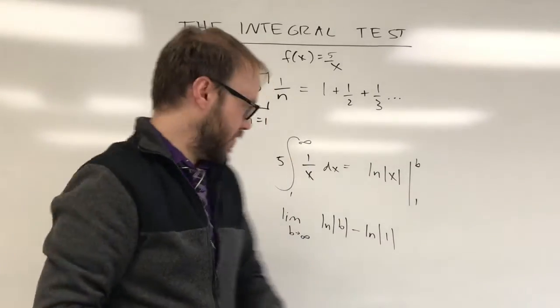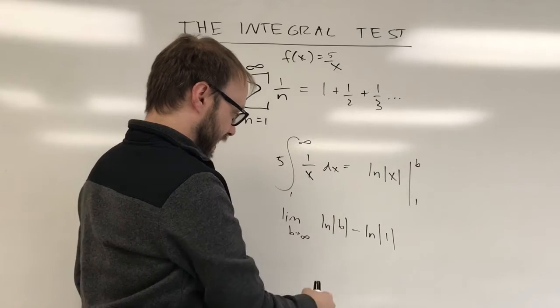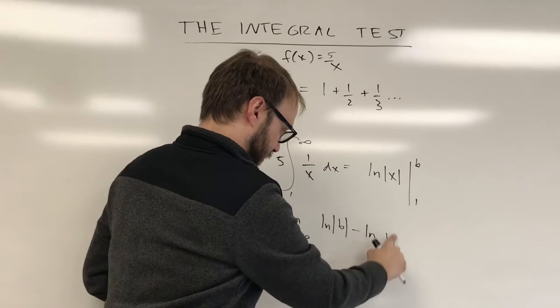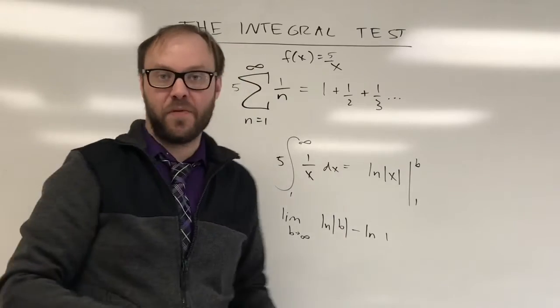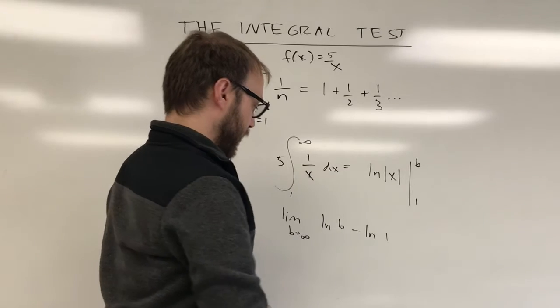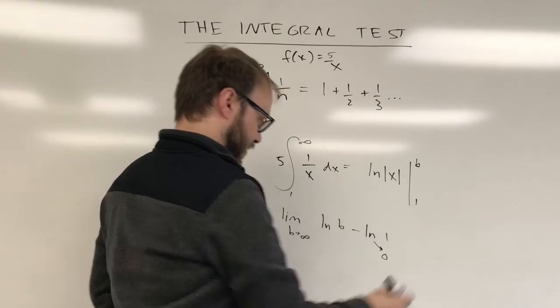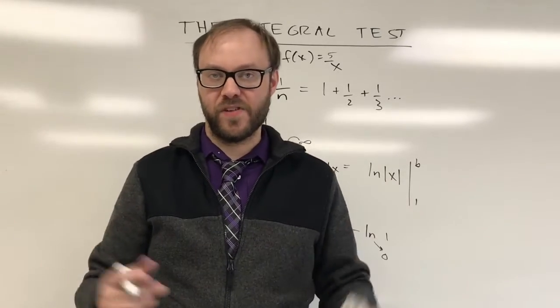So that's going to be the natural log of the absolute value of b minus the natural log of the absolute value of 1. The absolute values don't really do anything here. Our values are going from 1 to infinity. 1 is already positive, so we don't need that. And b is going to have to be positive as well, so we don't really need that either. And so anyway, the key here, natural log of 1, of course, is just equal to 0.